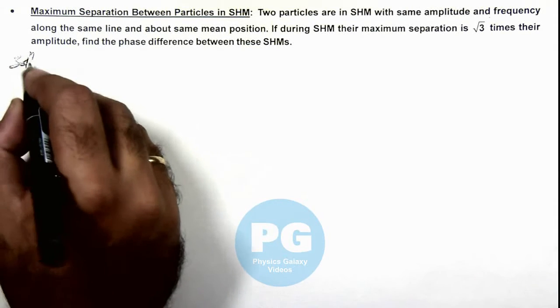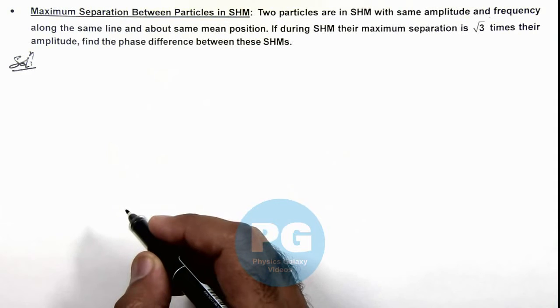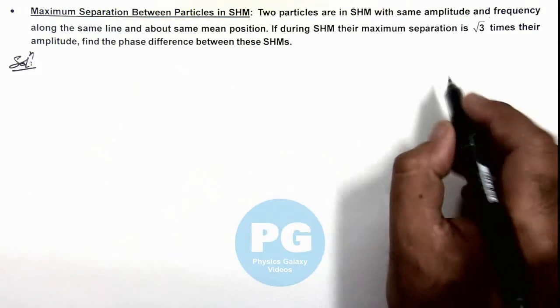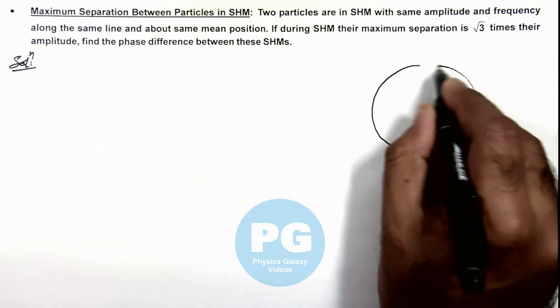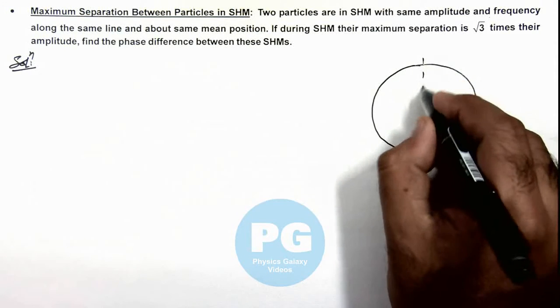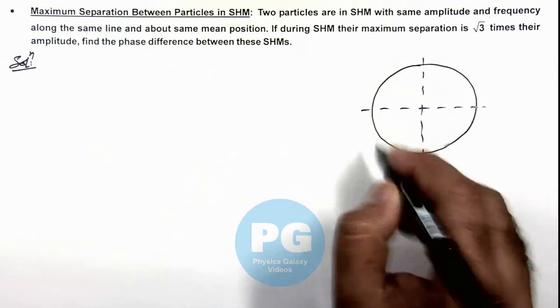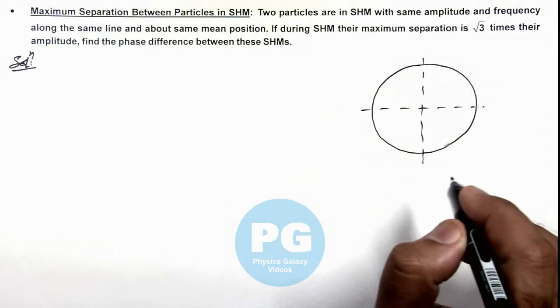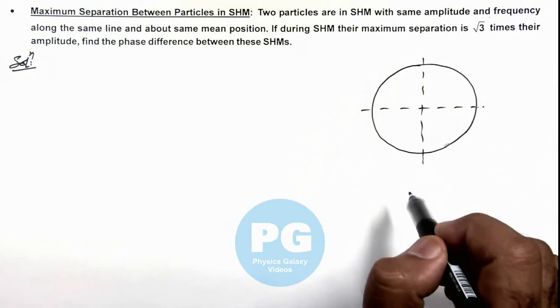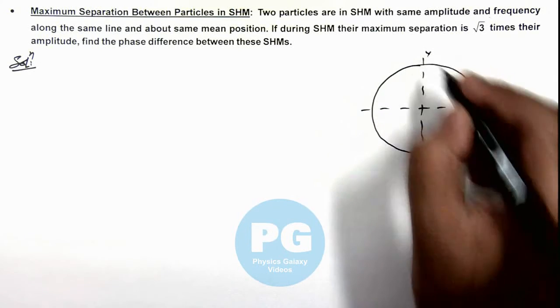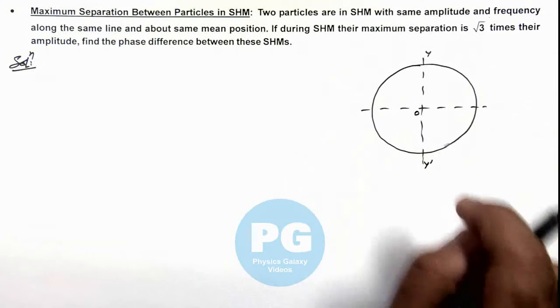As the problem is related to the phase of SHM, it is better to map these two SHMs on a circle. Here you can see if the two particles are executing SHM, of which the reference particle we consider revolving along this circle, then on the axis YY dash we can consider about this mean position O their SHMs.